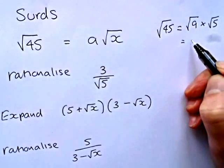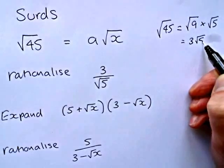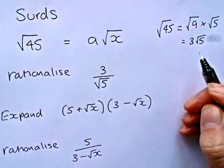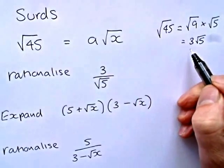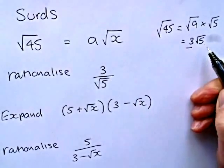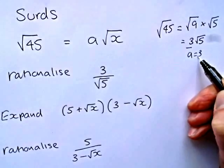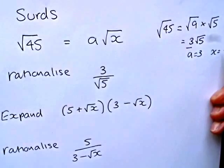And so we obviously take the square root of that, the positive square root, and our answer is 3 root 5. So a is 3 and x is 5.